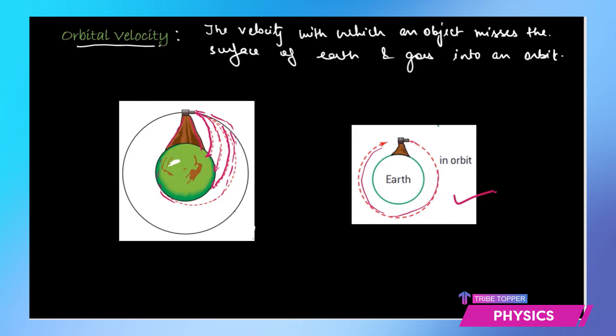So we can define that orbital velocity is the velocity with which an object misses the surface of the earth and goes into an orbit. So here this particular velocity with which this thing has been fired and it missed out the surface of earth and went into an orbit around the earth, that is called the orbital velocity.